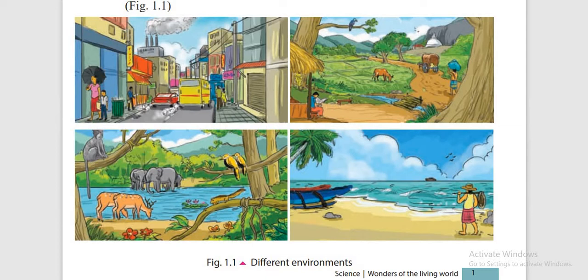In the city picture, you can note the travelers, people in the shops, houses, buildings and factories, vehicles and many others.